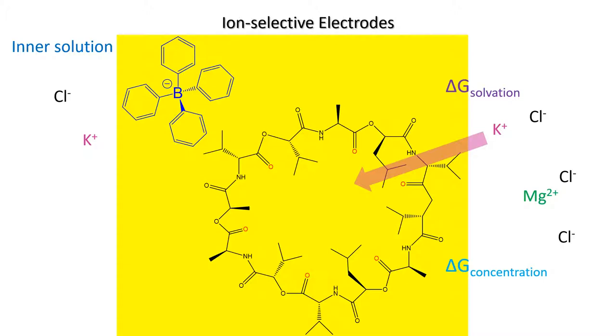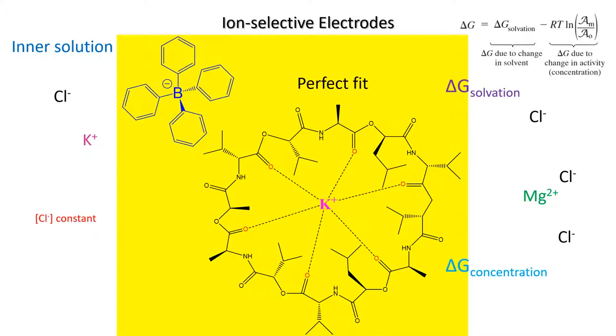But what will happen is potassium will readily permeate into the membrane and be complexed by the valinomycin where there's a tetraphenylboron counter ion to balance out that charge. Now you'll get a ΔG from the change in solvation of the potassium ion, and you'll get a ΔG from the change in concentration. Obviously ΔG is always proportional to a change in potential difference. So the potassium is complexed by the ligand, we get the two ΔG's, and we get a further ΔG due to the charge imbalance caused by removing the potassium from the analyte solution and the buildup of chloride ions.